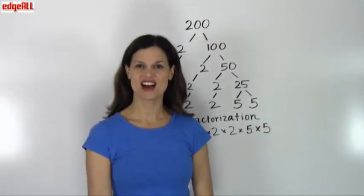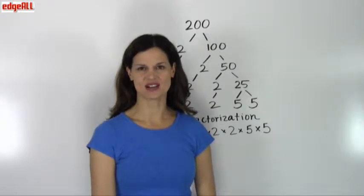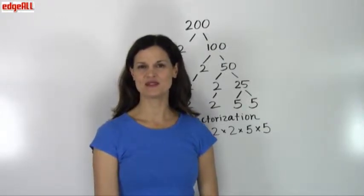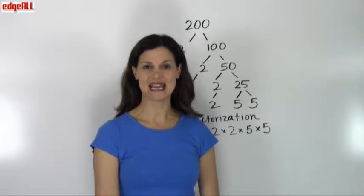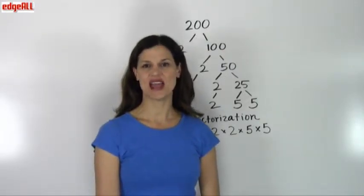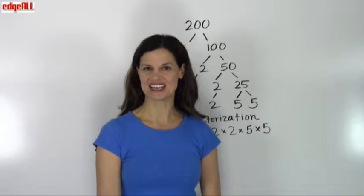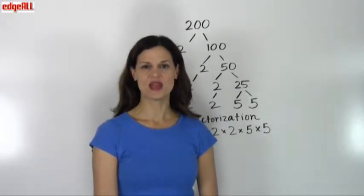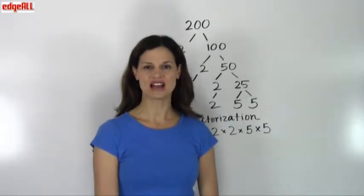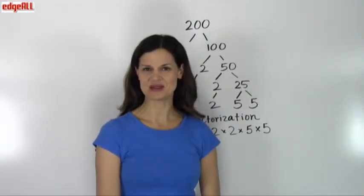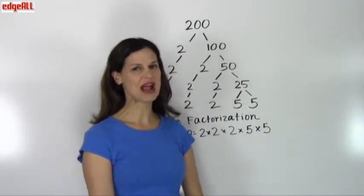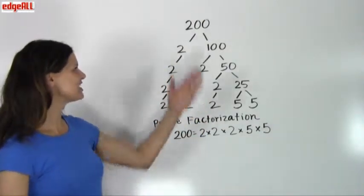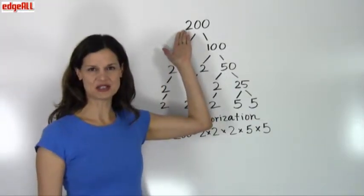Another way to quickly find the greatest common factor of two or more numbers involves prime factorization. Every number can be made by multiplying a set of prime numbers — this is known as prime factorization and is covered in another video. We find the prime factors by dividing out prime numbers one at a time. For a quick review, let's take a look at the prime factorization of the number 200.